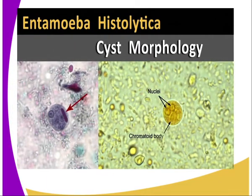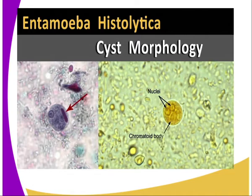When the amoeba cysts are ingested, the cyst membrane is digested and the protozoa are released. When they reach the large intestines and the colon, the Entamoeba histolytica multiply. Now let us look at the symptoms of somebody who is suffering from amoebic dysentery.